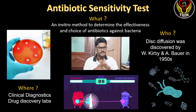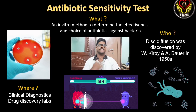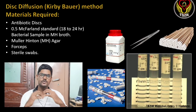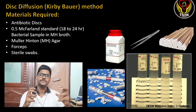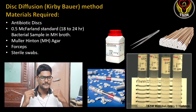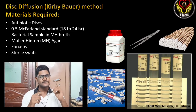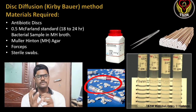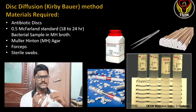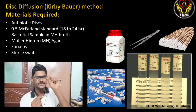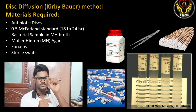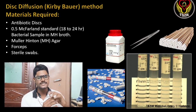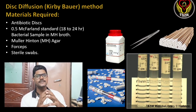Let's check the procedure to do this AST. The disc diffusion method is otherwise called the Kirby-Bauer method. The first material required is the antibiotic disc — we need to select which antibiotics we are going to study, and they come in disc shape. In the picture you can see there are small discs which contain antibiotics.